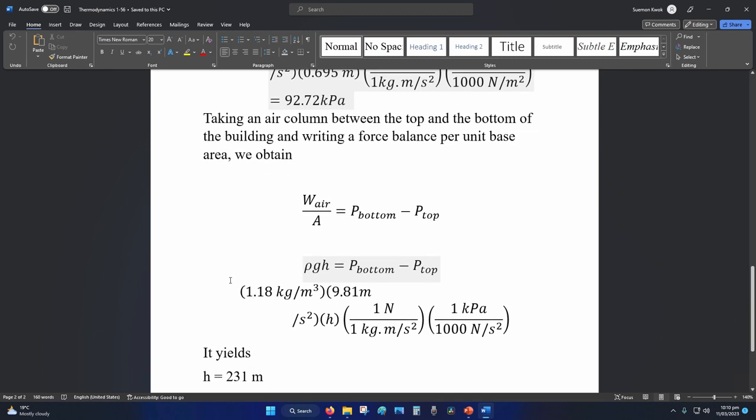So we know that pressure is equal to force over area. Weight is a force. So weight of air over area is equal to pressure difference, bottom pressure minus top pressure.